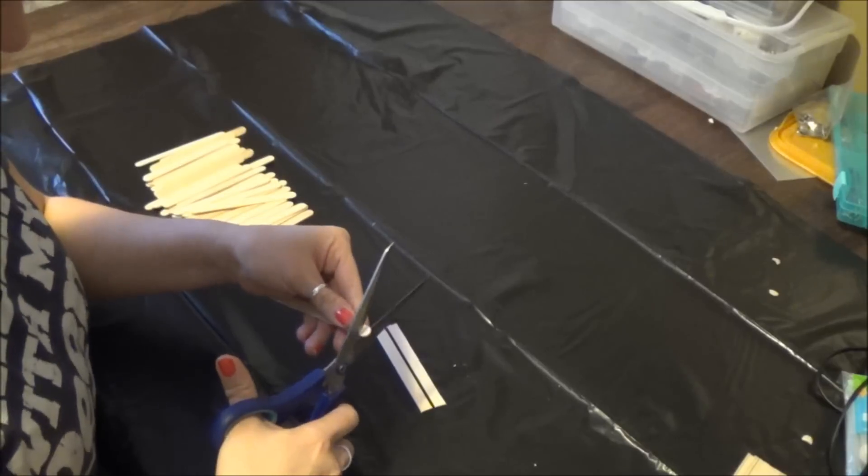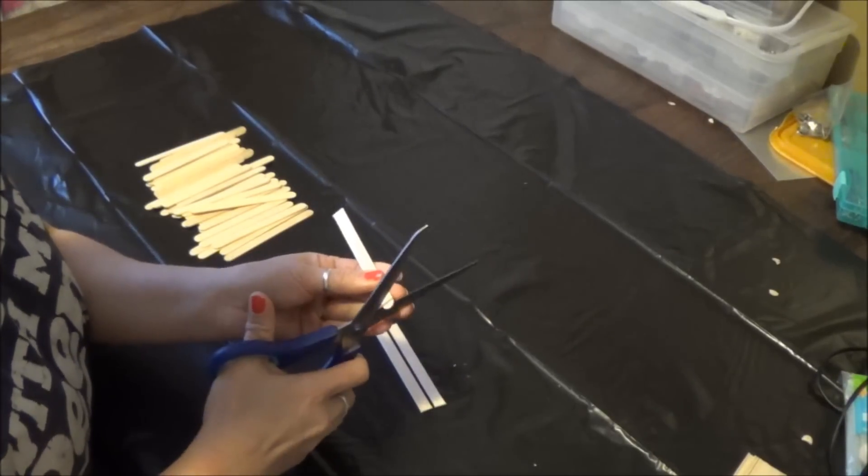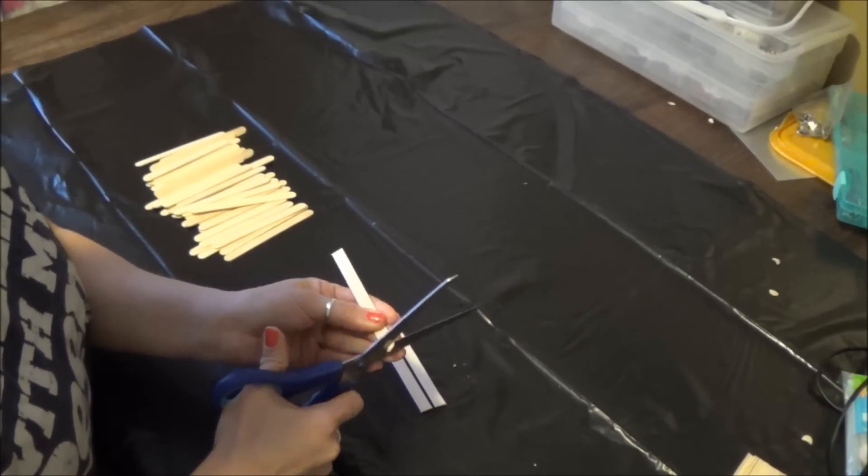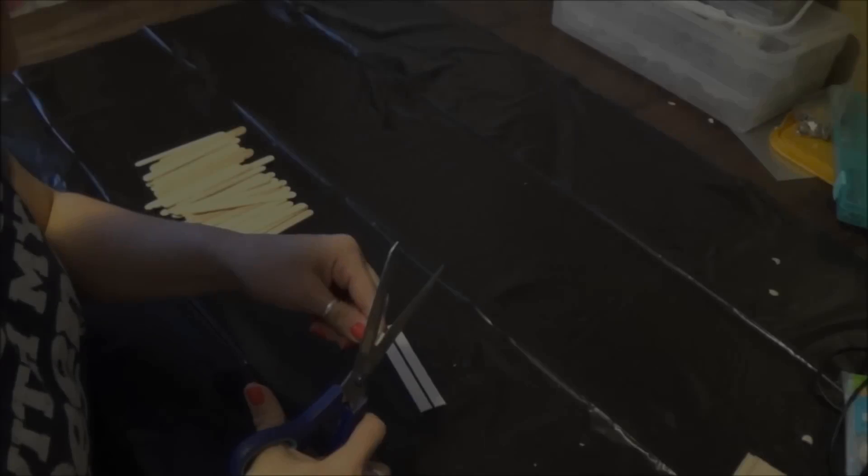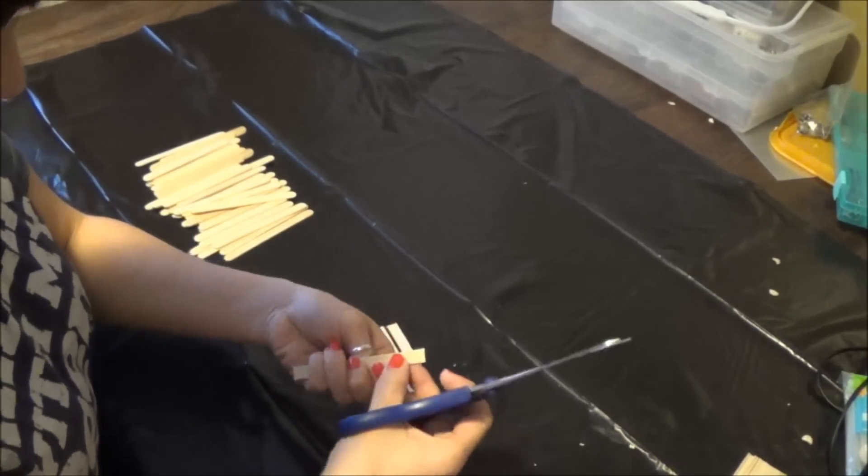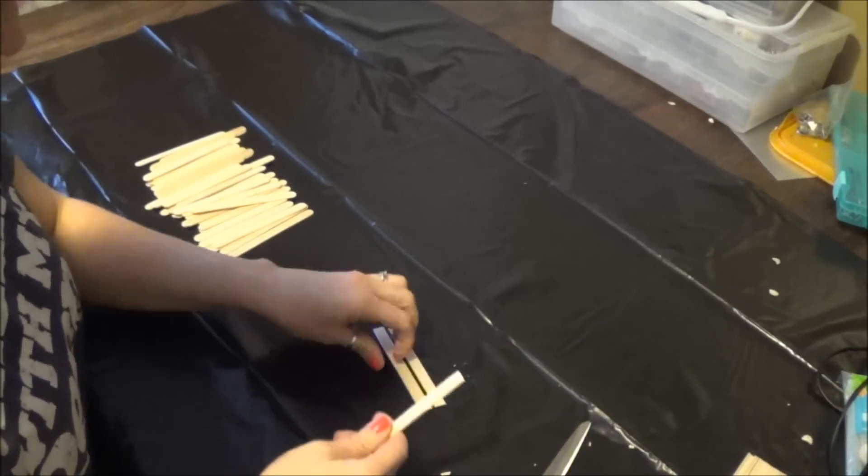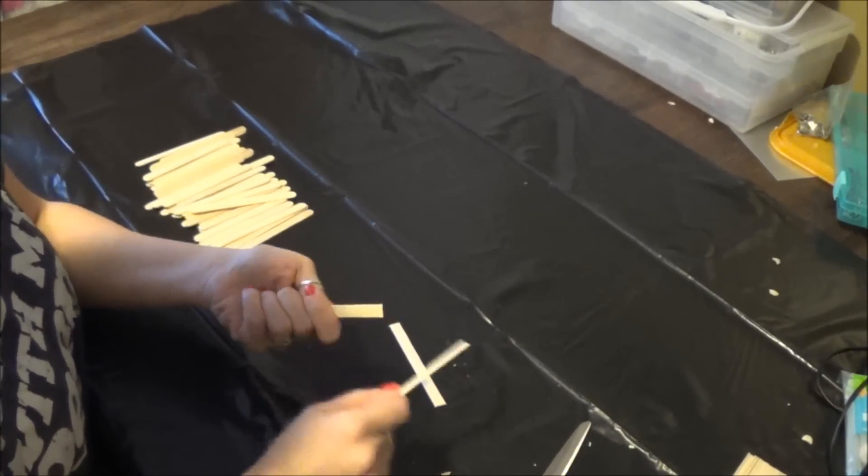So the first thing we want to do is cut off all the round part of the ends on the popsicle sticks. It doesn't really matter if they're jagged or uneven, just make them about the same size because you don't want them sticking out on the ends. If you get little shards of wood that stick up, you can just brush that off or you can take the ends and just sort of go like this with it.